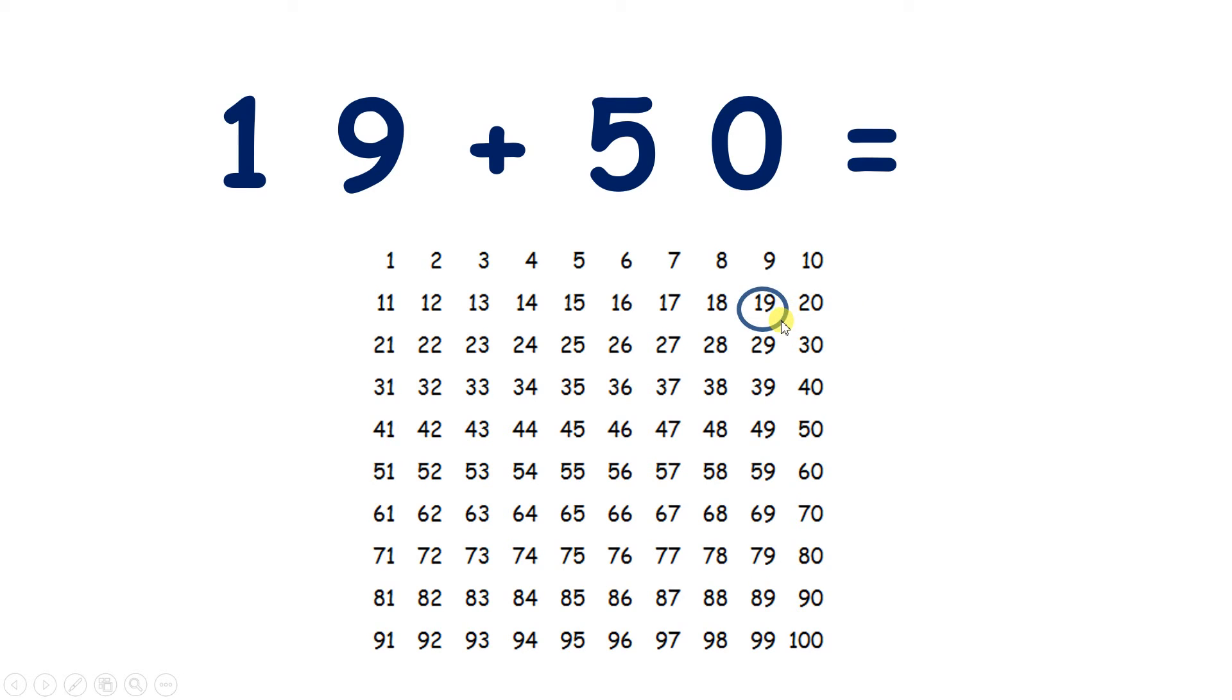So we can start on 19, and we're adding 50, which is five tens. So we move down one, two, three, four, five places, which takes us to 69. So 19 plus 50 equals 69.